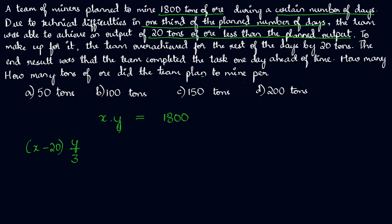Now they had to make up for it. They have been going slow, which means the first y by three days they were able to achieve only x minus 20 tons per day. The amount of work is going to pile up, so at some point you'll have to start making up for it, putting in extra hours. That's what the team is trying to do here.